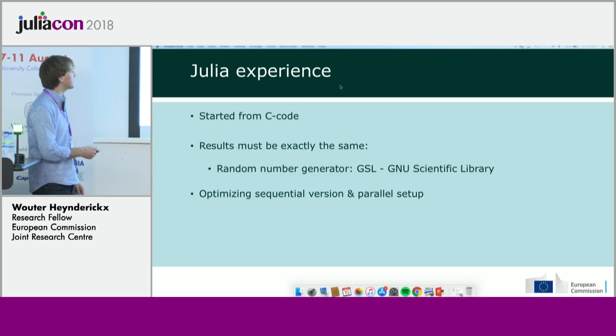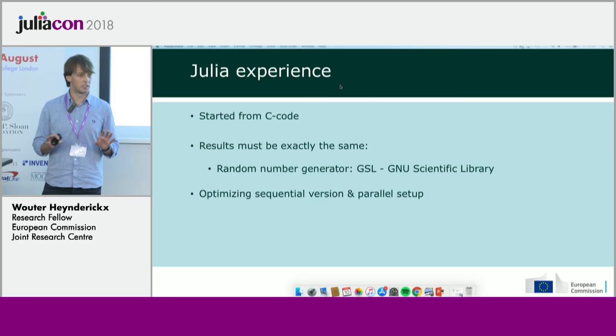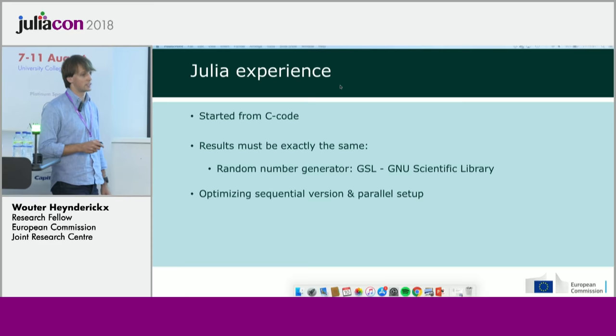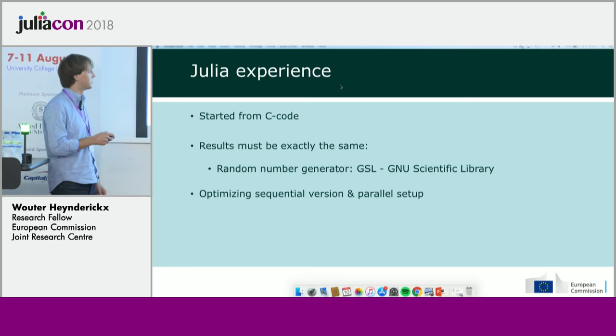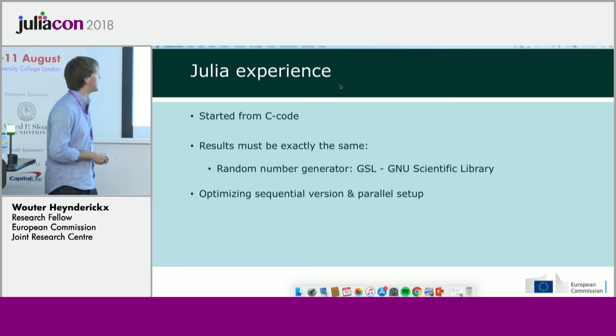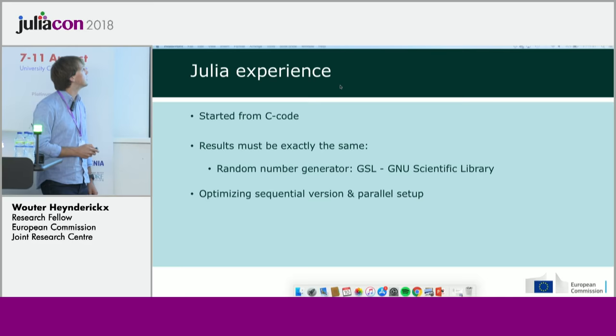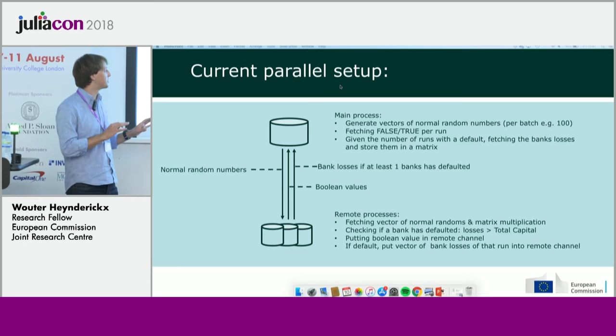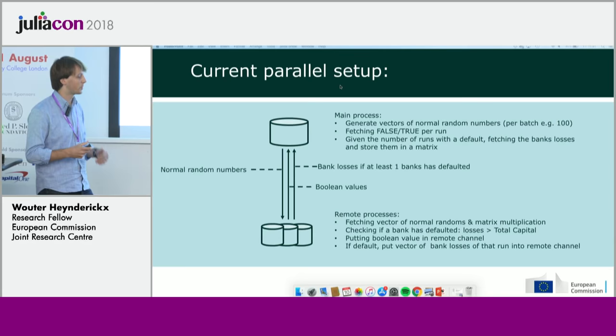My Julia experience: I started from the C code — which was essentially pseudo-code to me since I had never written C — and the results had to be exactly the same. To ensure this, I used the GSL random number generator called from the C code. I first optimized the sequential version, then set up the parallel version.